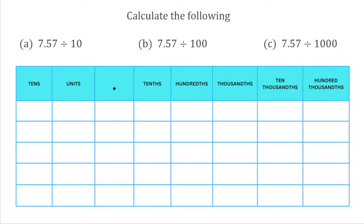When we're dividing by 10, 100 and 1000, we can use a place value diagram to help us. All we have to do when we're dividing by powers of 10 is move the digits in the number to the right-hand side of the decimal place. The number of places we move the digits is shown by how many zeros there are in the number we're dividing by.